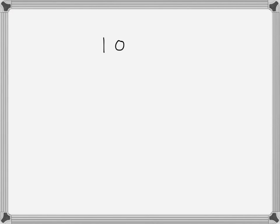Binary numbers are strings of ones and zeros, and each digit is known as a bit. For example, 10001001 is an eight-bit number because there are eight digits. Normally, when you look at a binary number, if not otherwise specified, it is an unsigned number — that is, a positive number. When we want to express a negative number using binary, we resort to a signed representation.